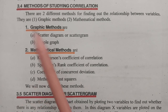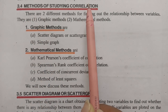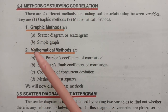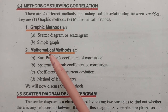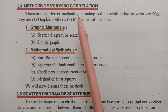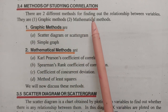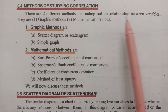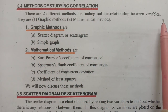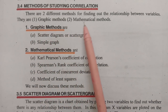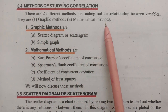Today's video is on methods of studying correlation. There are two different methods for finding out the relationship between the variables: the graphical methods and the mathematical methods.